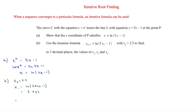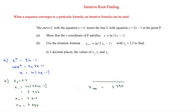With the Ans function stored, press equals to get the next iteration. x₂ = 2.417. Pressing equals again gives x₃ = 2.406. As we can see, it's converging closer and closer to the actual answer. If we kept pressing equals the sequence would converge to 2.396, but this question only asks for x₁, x₂, and x₃.